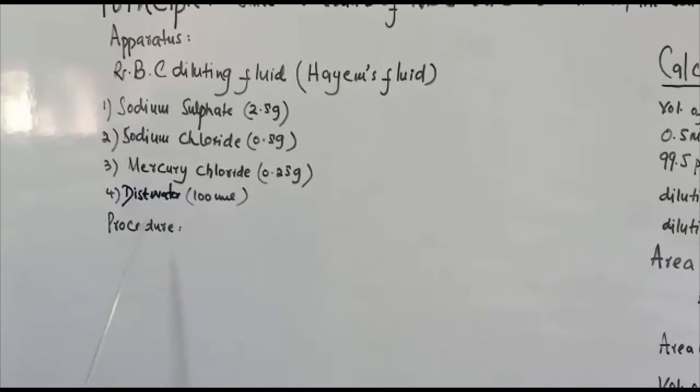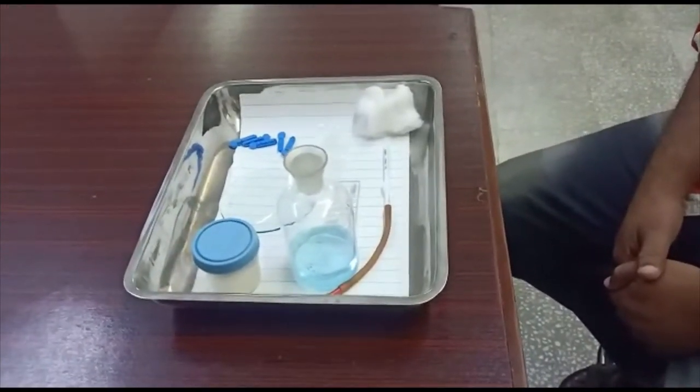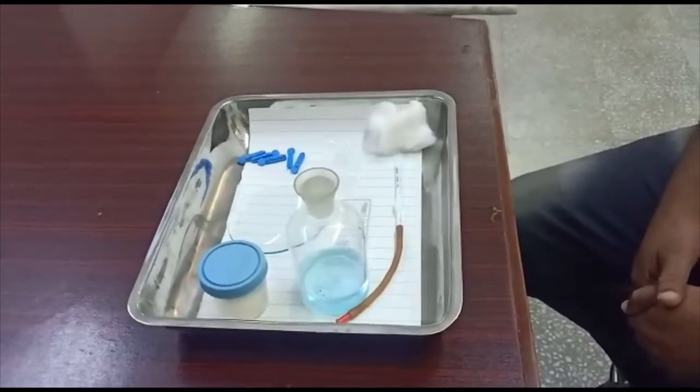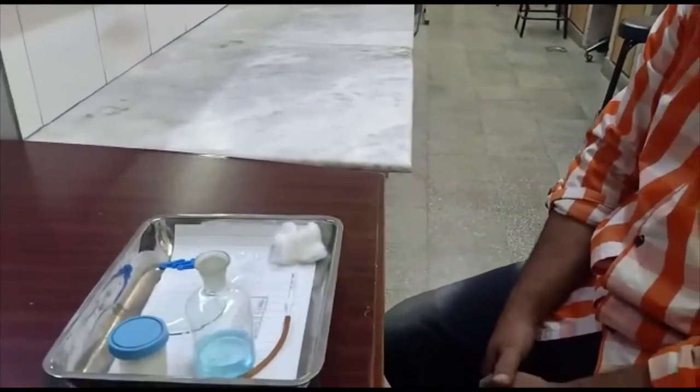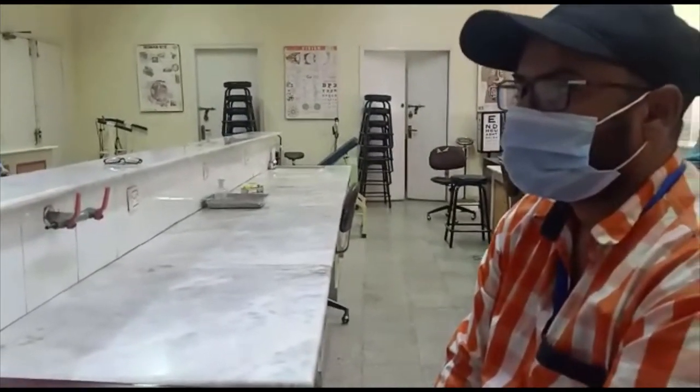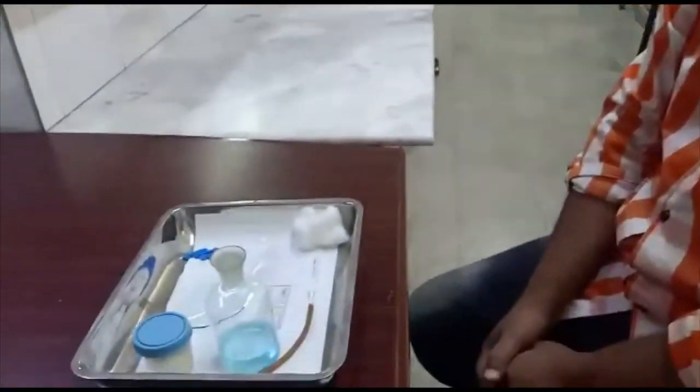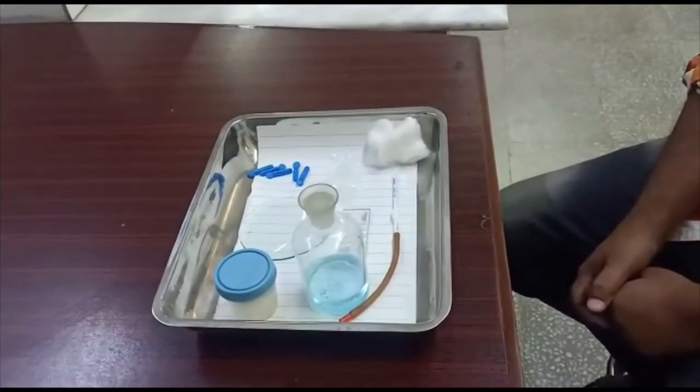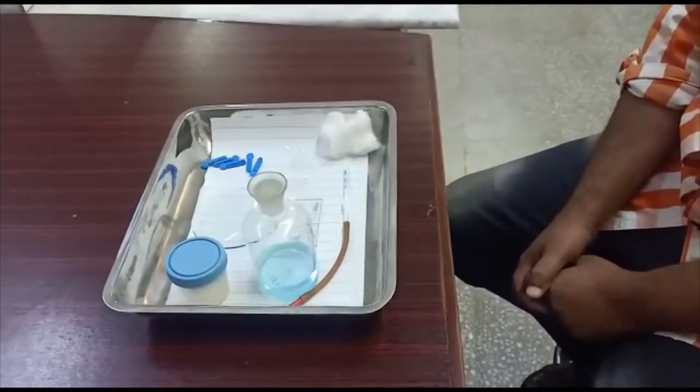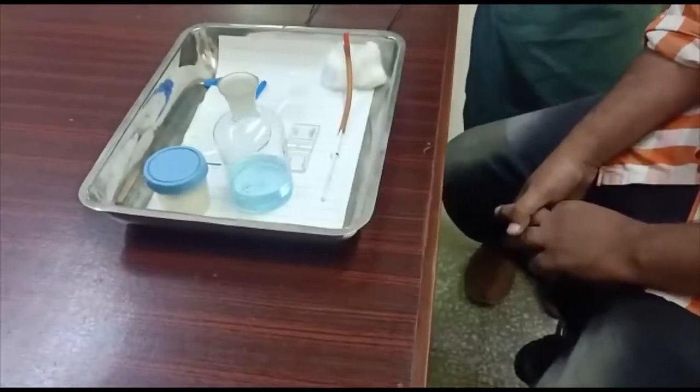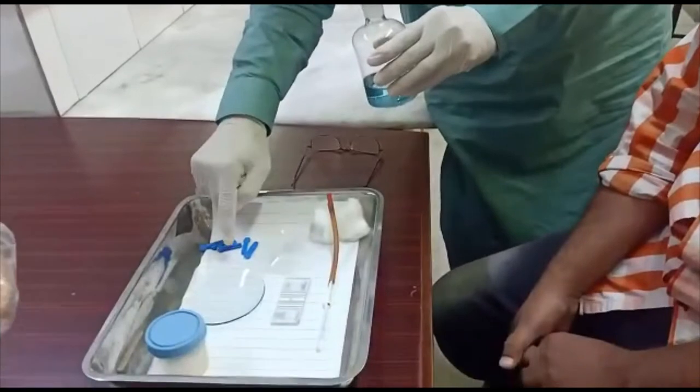Now we will perform the practical. We will start the practical and the three important things that we do before starting every practical are: we introduce ourselves to the subject, we take consent, and we explain the procedure. Assalamualaikum, my name is Dr. Maasouma and can I do this experiment on you? Yes. We will check the blood from the finger and examine the red blood cells. I will start the procedure.